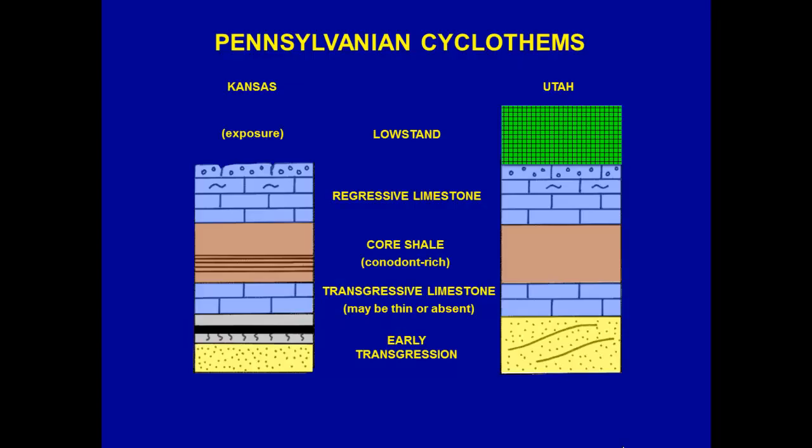The Pennsylvanian cyclothems comparing Kansas to Utah in the Paradox Basin show the same thing. In the offshore facies, you see the core black shale with the same conodonts in it. The regressive limestones are very similar with phylloid algal mounds. In Utah you get evaporites during the low stand; there's an exposure surface in Kansas. During the early transgression in Kansas, you have backfilled river channels with transgressive coal on top; in Utah, this is usually aeolian sandstones.